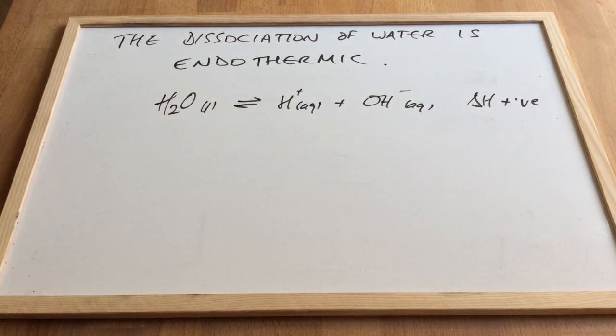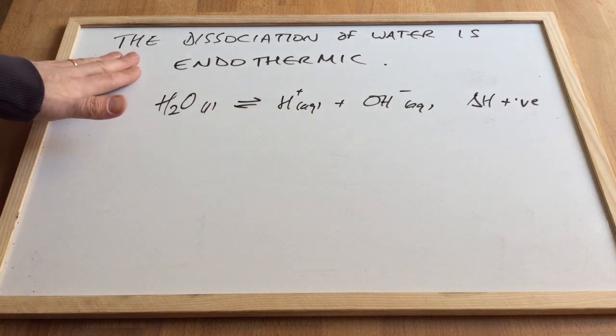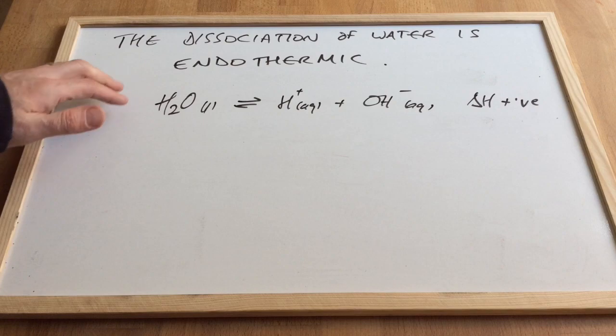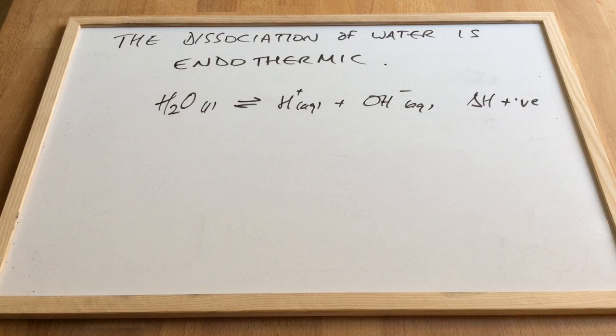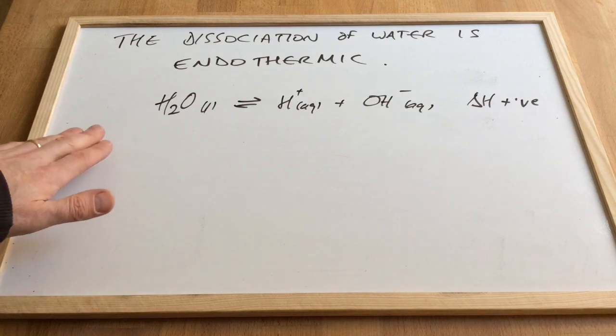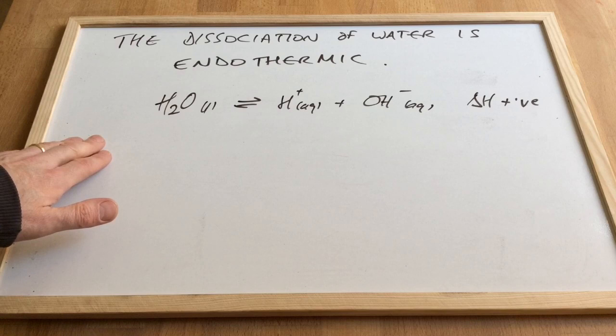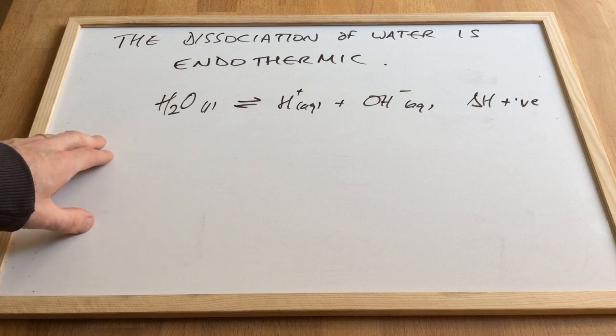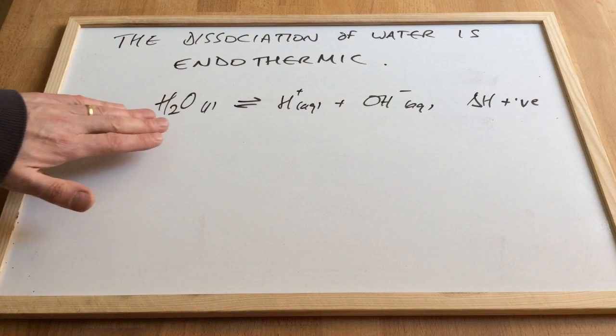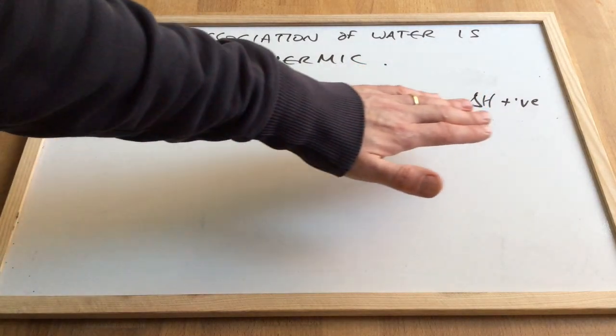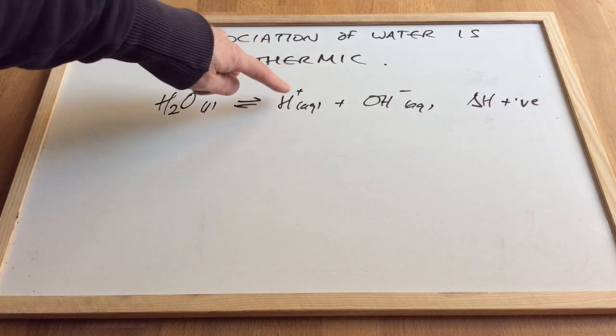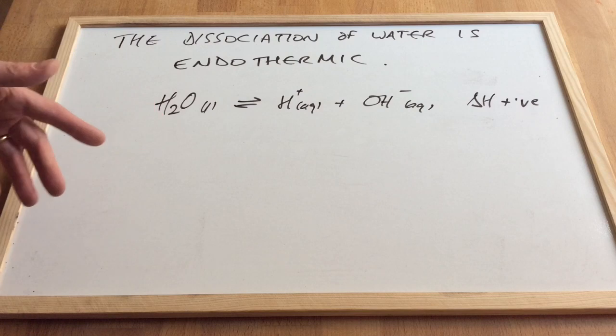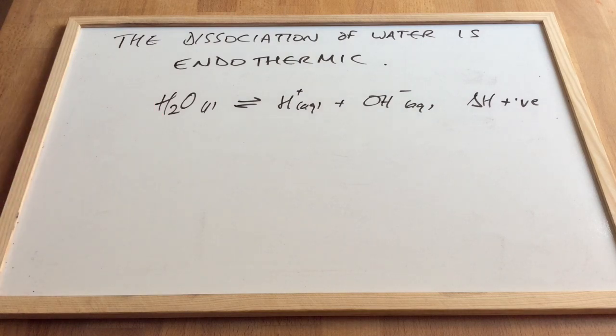So we'll just finish by looking at what temperature will do to this dissociation. So statement, the dissociation of water is endothermic. So there it is again. We've got a positive delta H. So what does that mean? If you increase the temperature, an increase in temperature always favors the endothermic direction. So temperature increase will make this dissociation occur more to the right. And therefore, what will that do to KW? Well, it's going to give us more of these than this, than we had at the lower temperature. So KW is going to increase.